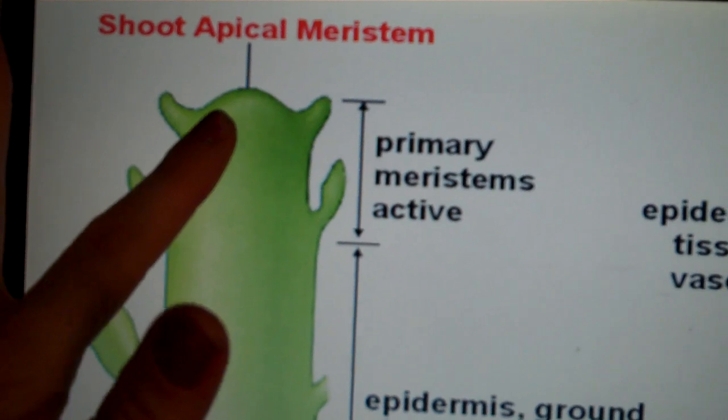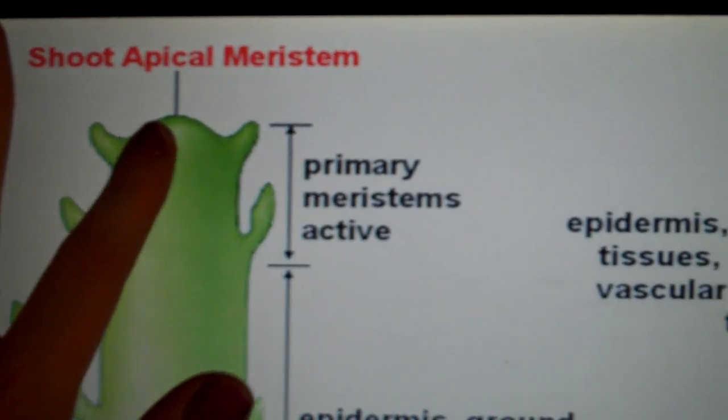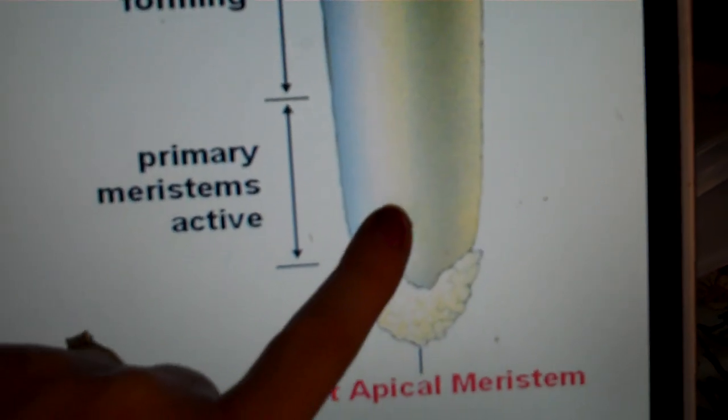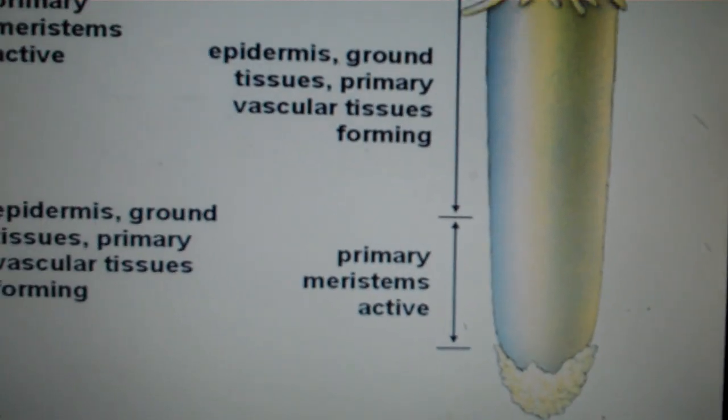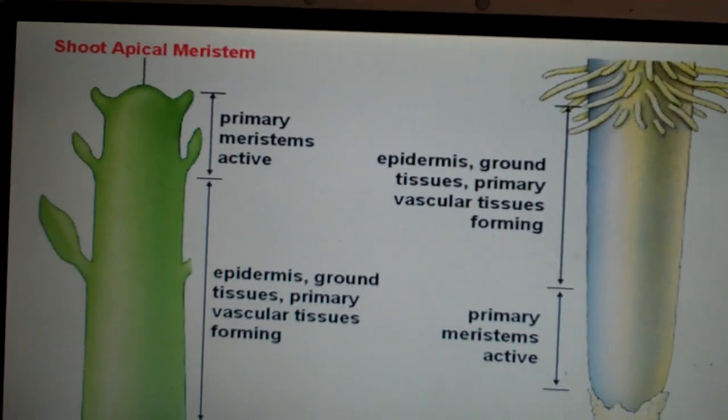This is found at the apical meristem, which is at the tip of the shoot or the tip of the root. Those are both called apical meristem and most of the primary growth will occur there.